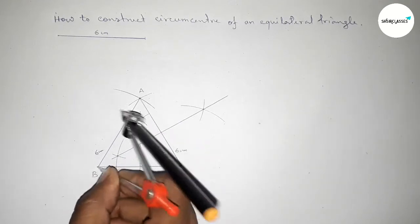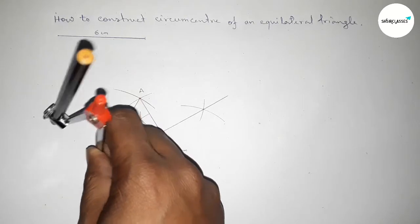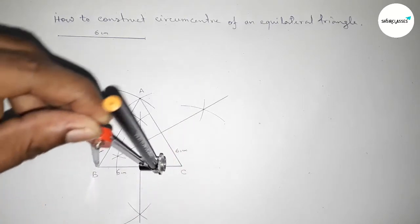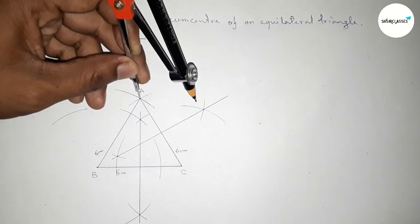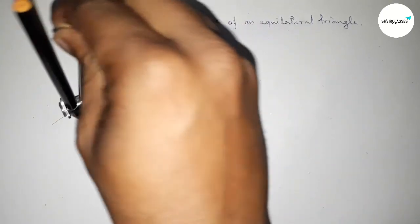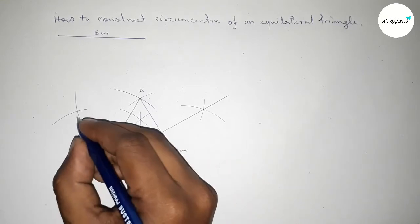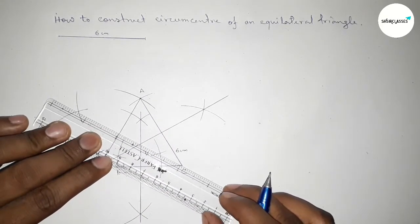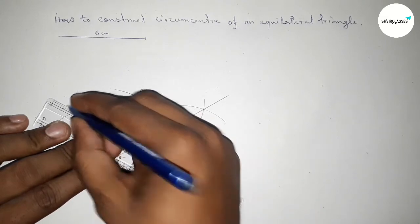Next, bisecting the line AB. Putting the compass at A and taking greater than half of AB, drawing an arc, then with the same length putting the compass at B and cutting here. Both curves intersect at a point, so now joining the perpendicular bisector of AB.